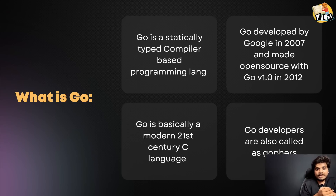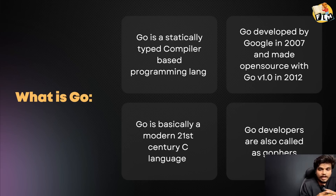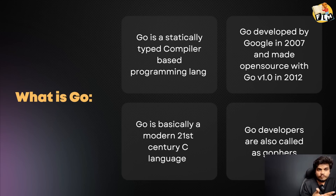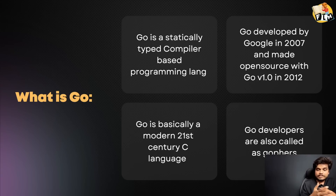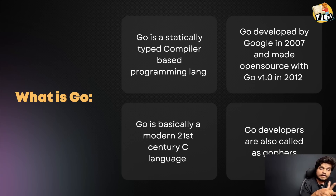Go is a compiler-based programming language. Java is also a compiler-based programming language. But when you compile Java code, it generates intermediate code which is called bytecode. That bytecode runs on the JVM. The JVM is responsible for converting this bytecode into machine language code.